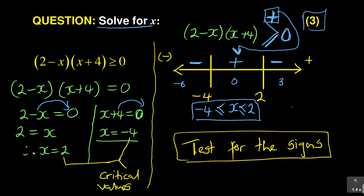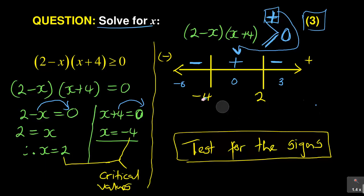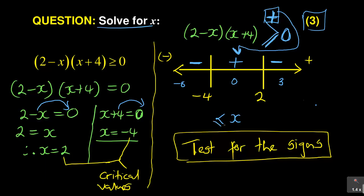Since the positive region is in the center (between negative 4 and 2), your answer is written with x in the middle: negative 4 is less than or equal to x, and x is less than or equal to 2. Do not write it incorrectly. The signs always face the same direction: negative 4 ≤ x ≤ 2. That is how you write your answer.